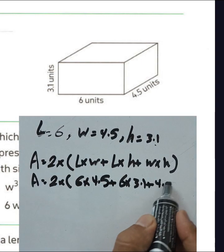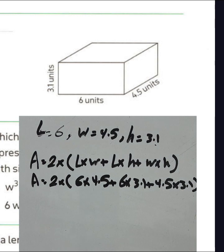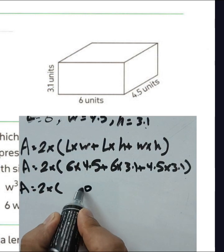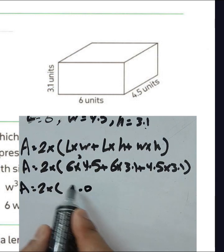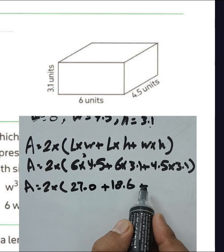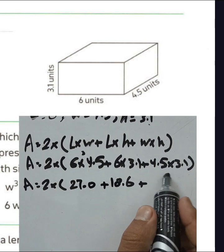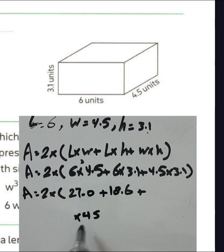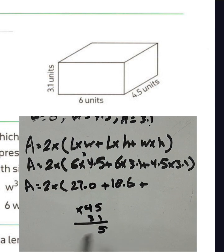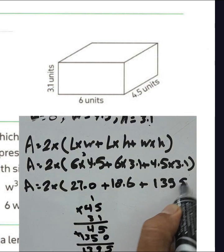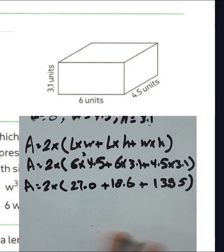Substituting: length 6 times width 4.5, plus length 6 times height 3.1, plus width 4.5 times height 3.1. Computing 6×4.5: 5×6=30, carry 3; 4×6=24+3=27, so 6×4.5=27.0. Computing 4.5×3.1: treating as 45×31=1395, then placing the decimal after two places gives 13.95.